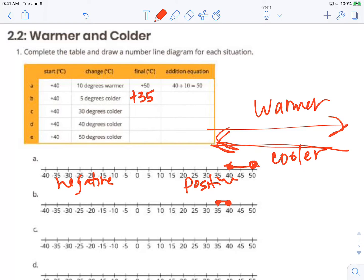So even though it got colder it's still a positive temperature. We can write that as positive 40 plus a negative 5 because that's a change colder. That'll leave us with a positive 35 degrees.